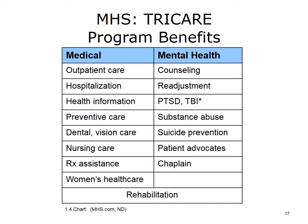This table shows some of the benefits offered through the TRICARE program. TRICARE medical coverage includes outpatient health care visits, hospitalization, health information, preventive health care, dental and vision care, nursing care, pharmacy benefits, and services for female personnel such as maternity care. Programs for mental health include counseling, help in readjusting to civilian life, coping with trauma such as post-traumatic stress disorder and traumatic brain injury, substance abuse problems, and suicide prevention. Personal coaches are on hand to help coordinate medical care, and chaplains are available.